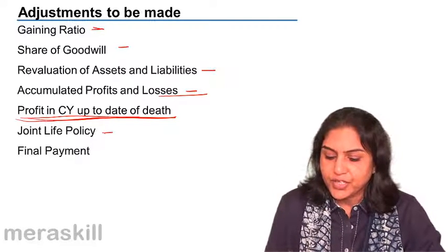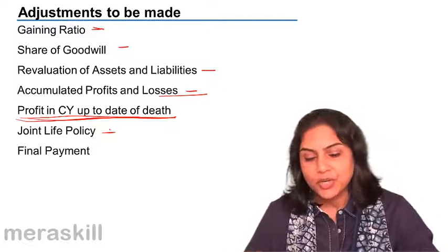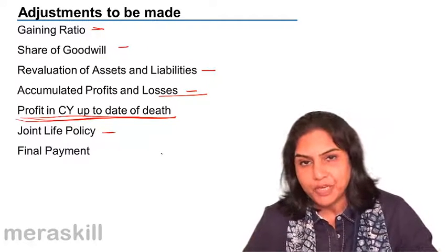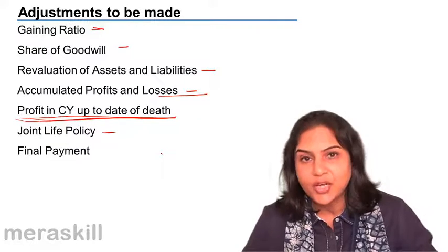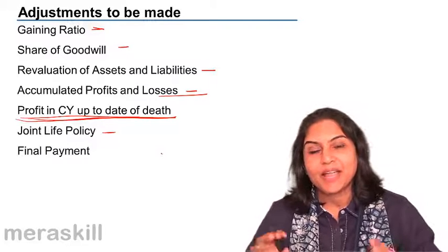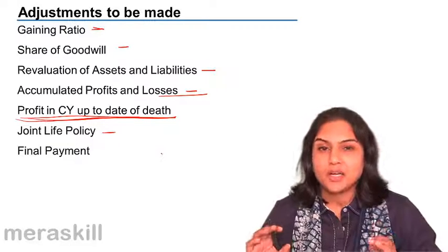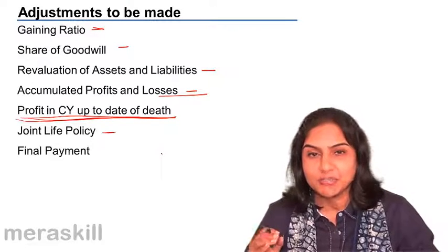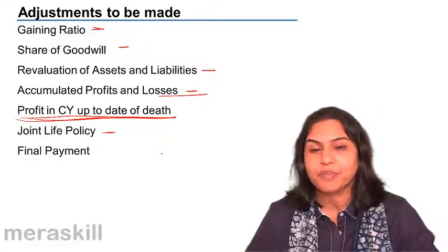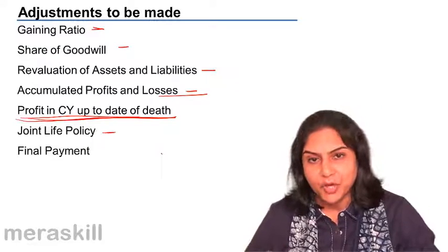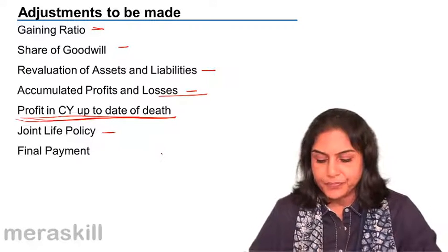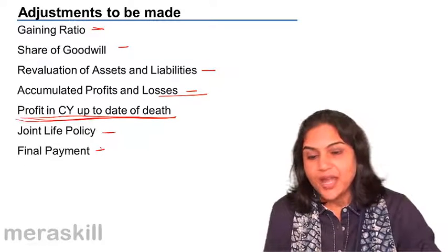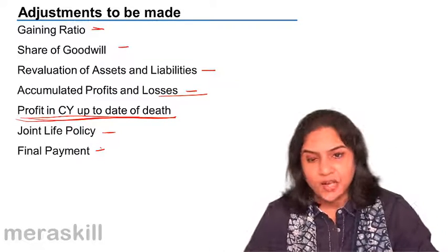This is new. There is of course again the joint life policy — only on the death of a partner, the amount received from the insurance company is not the surrender value but the actual policy amount, because the policy has matured on the death of any one of the partners. And there is of course the final payment which is made to the executors.